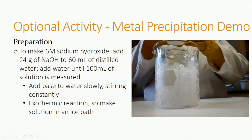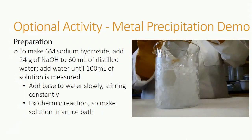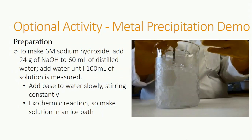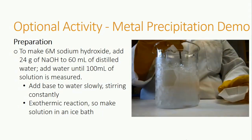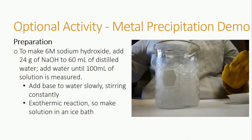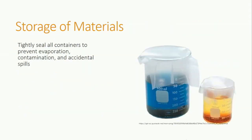Making 6 molar sodium hydroxide is very similar to making the acid solution. Again, you will need to make the solution in an ice bath because the reaction is exothermic. Sodium hydroxide is a solid that is dissolved into about 60 milliliters of water by slowly adding sodium hydroxide into water and stirring constantly. Once the sodium hydroxide is all or mostly dissolved, top off the solution to 100 milliliters. Be sure to tightly seal all containers to prevent evaporation, contamination, or accidental spills. You can use parafilm or another tight lid.